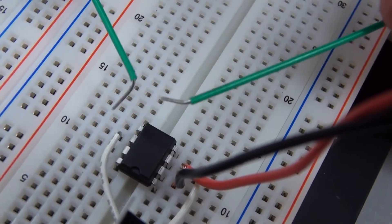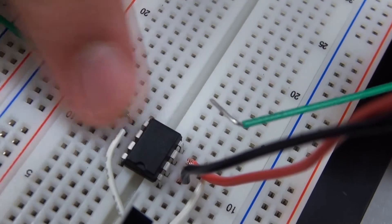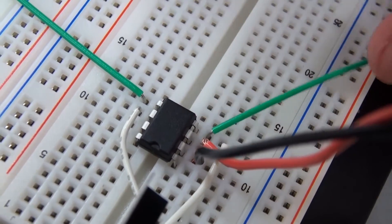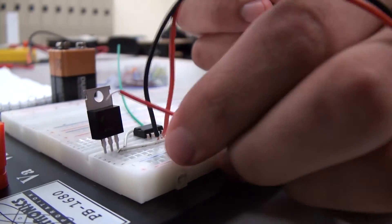Now we're connecting the output jumpers, which go to the speaker. Now we're connecting the battery clip, which will power the amplifier.